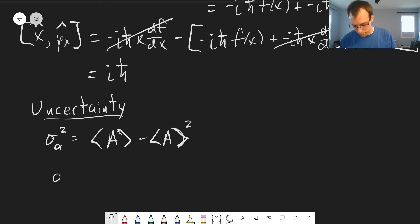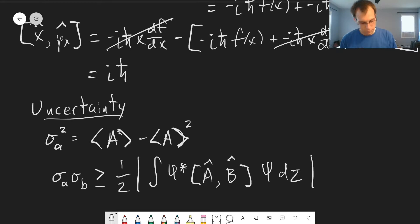We can show that if we have two different observables a and b, if we multiply their uncertainties by each other, sigma a times sigma b, will always be greater than or equal to one half times the absolute value of the integral psi star commutator of the operators a and b psi d tau. This shows that there's a relationship between the uncertainties and the commutator.